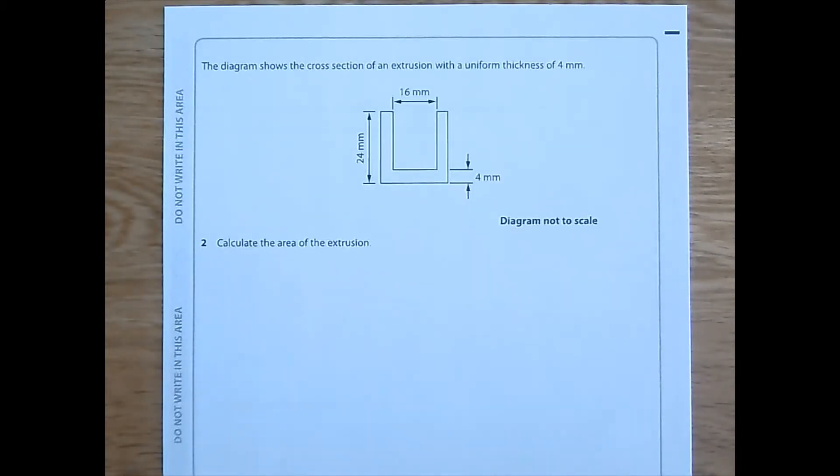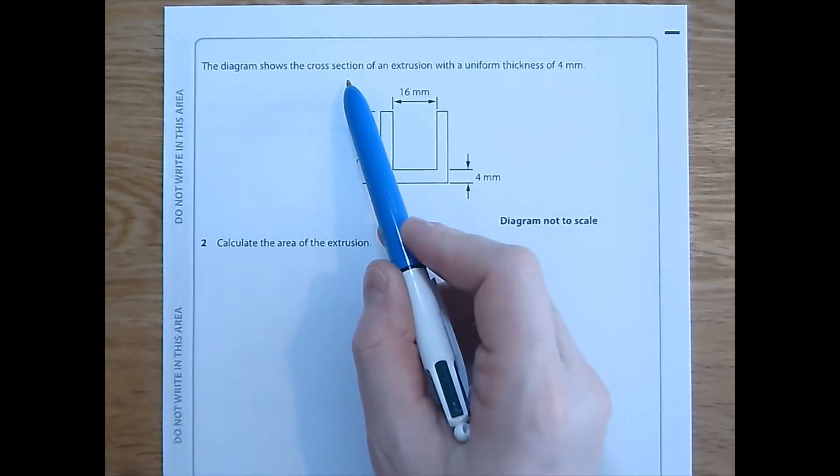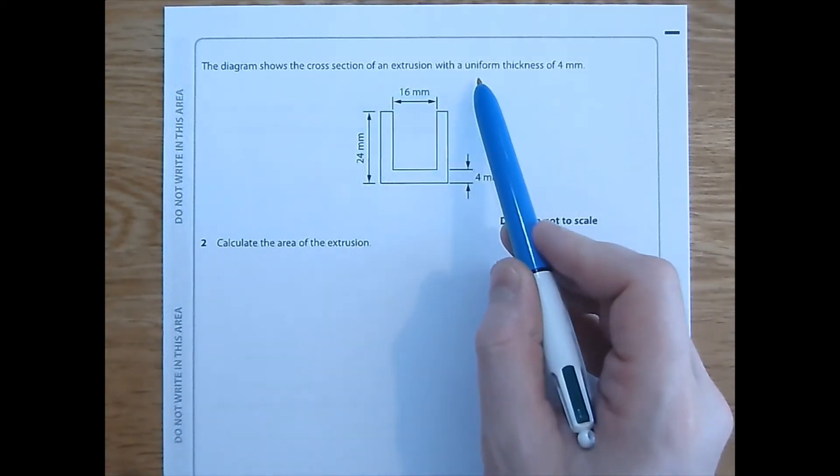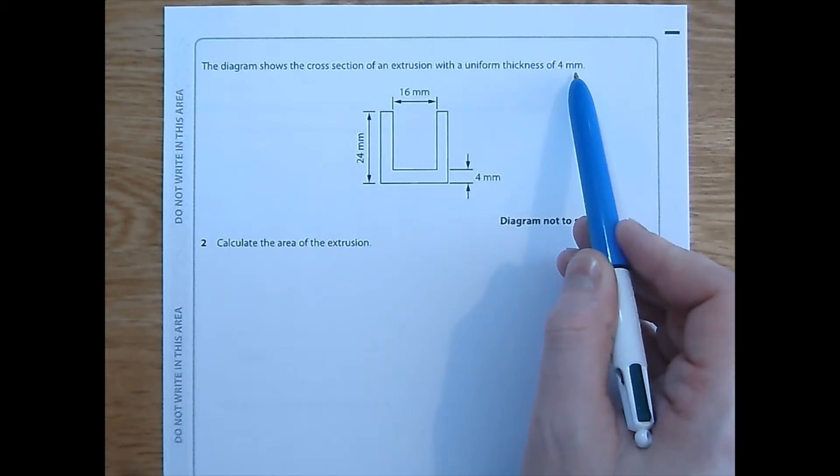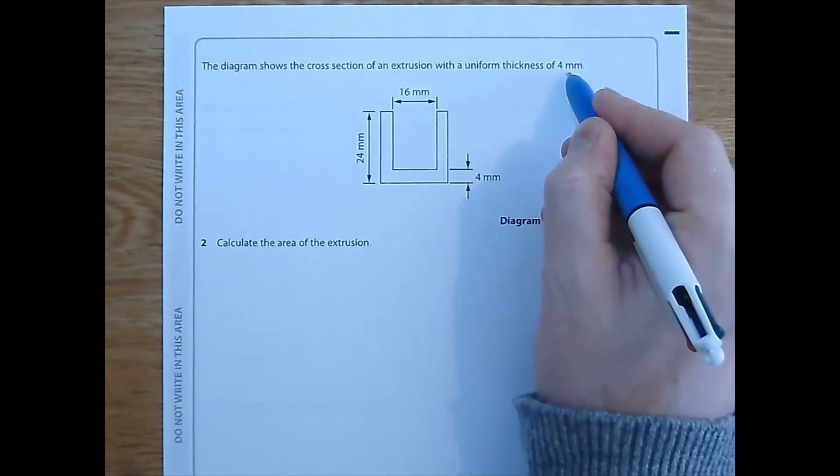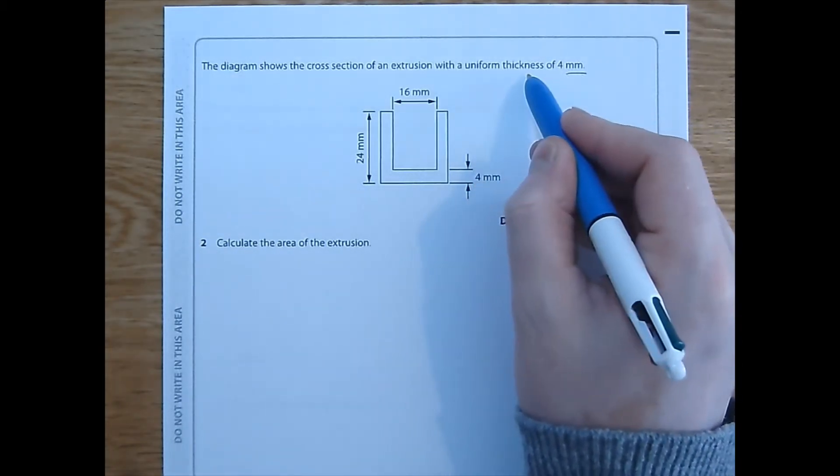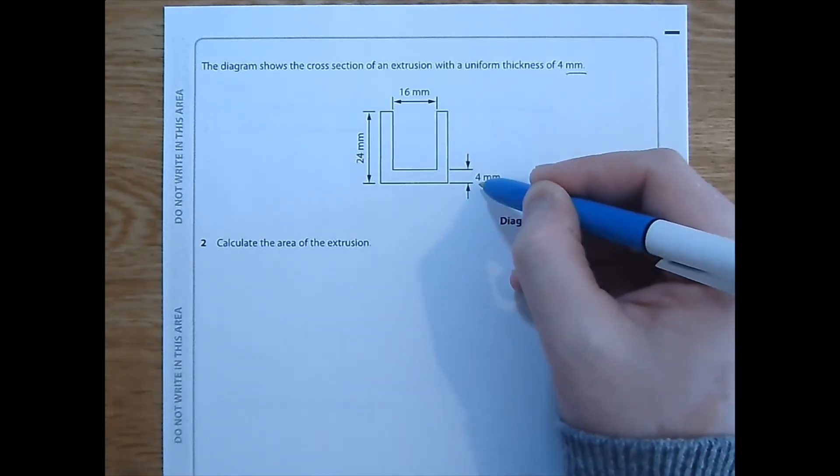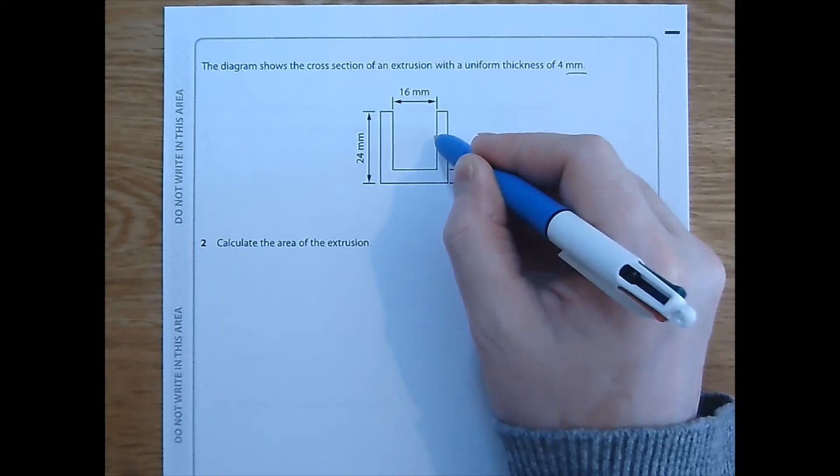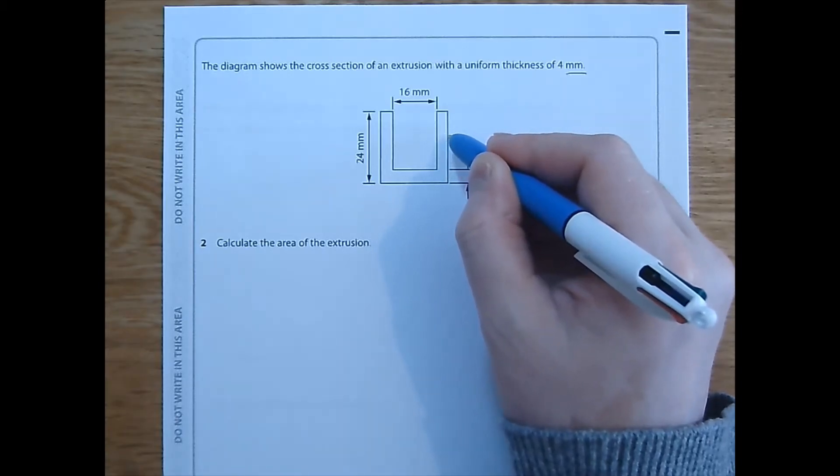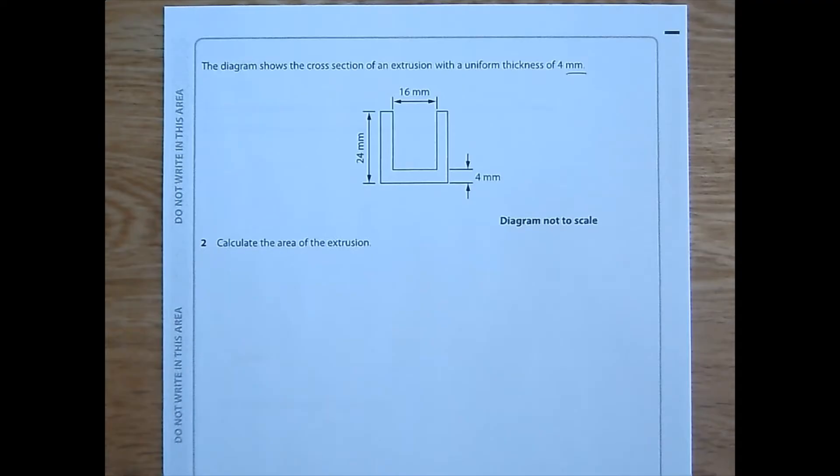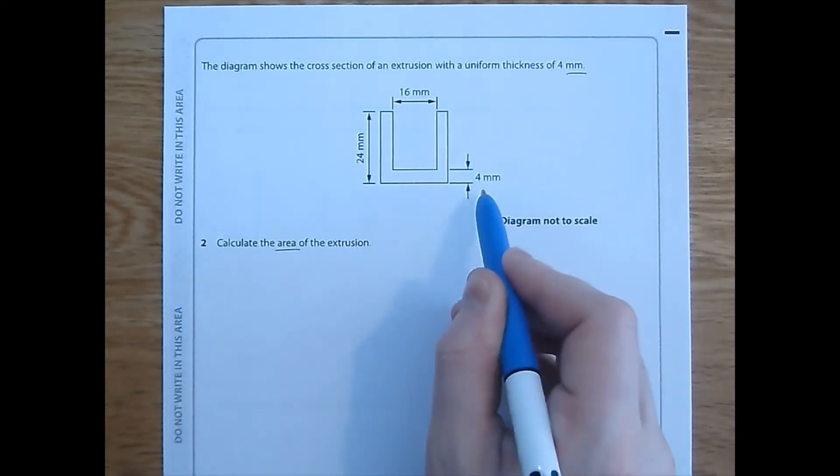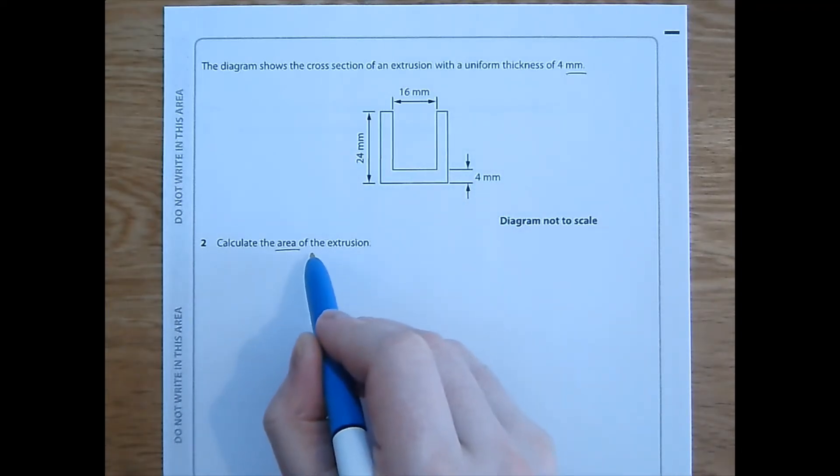Question 2. The diagram shows the cross-section of an extrusion with a uniform thickness of 4mm. OK, so millimeters will be our units for this. Uniform thickness. So that means this distance here, that's 4mm, but we also know this thickness here is also 4mm, and this one as well. We're asked to calculate the area, so given that we're using millimeters, that'll be millimeters squared for answer, of the extrusion.